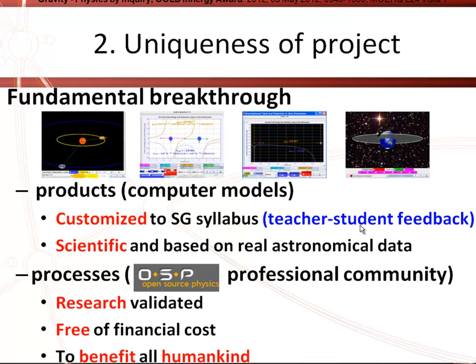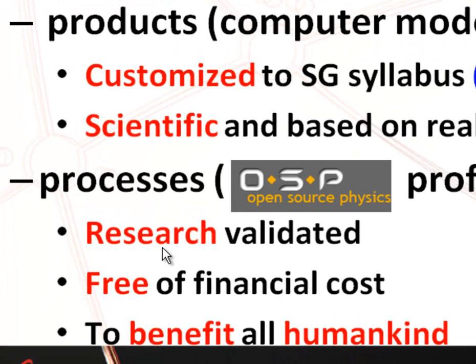These are all done using actual astronomical data — they are not mere animations. These are simulations, which is a different genre. The process is research-validated because physics professors review them. I also submit these models to the open source physics library, where professors check the models to ensure they are scientifically accurate in representation. It is completely free — anybody can use it with the main aim of benefiting humankind.